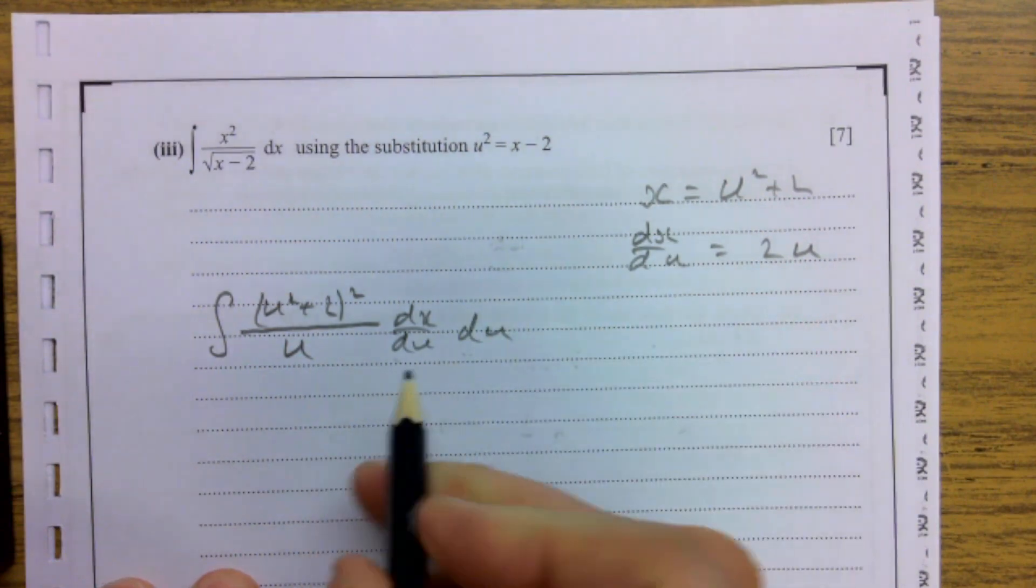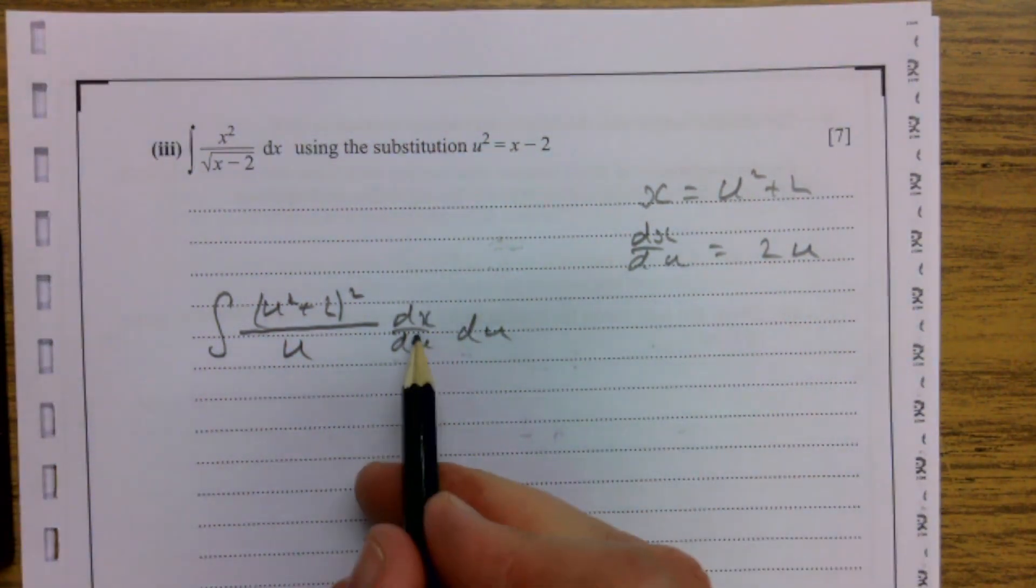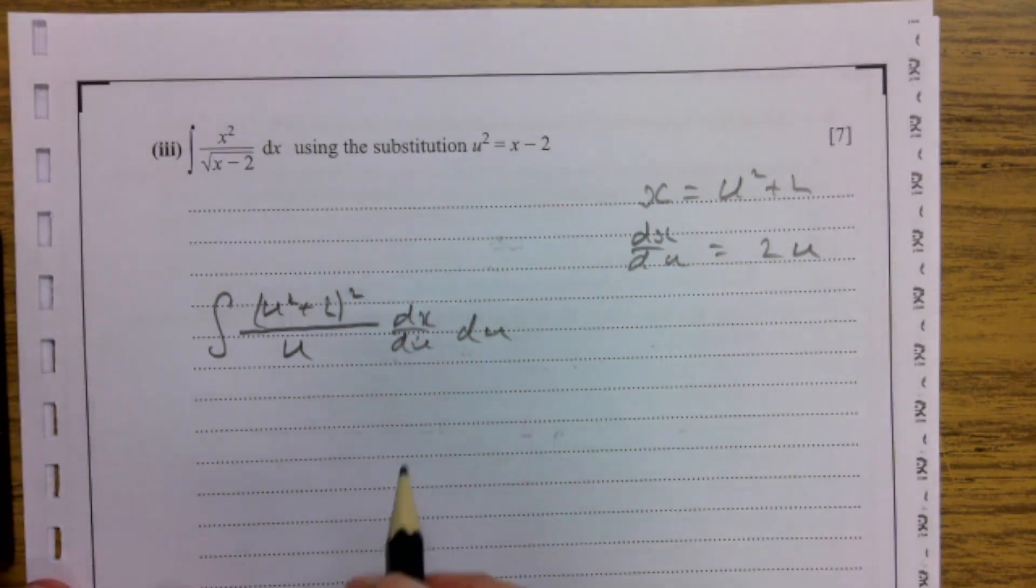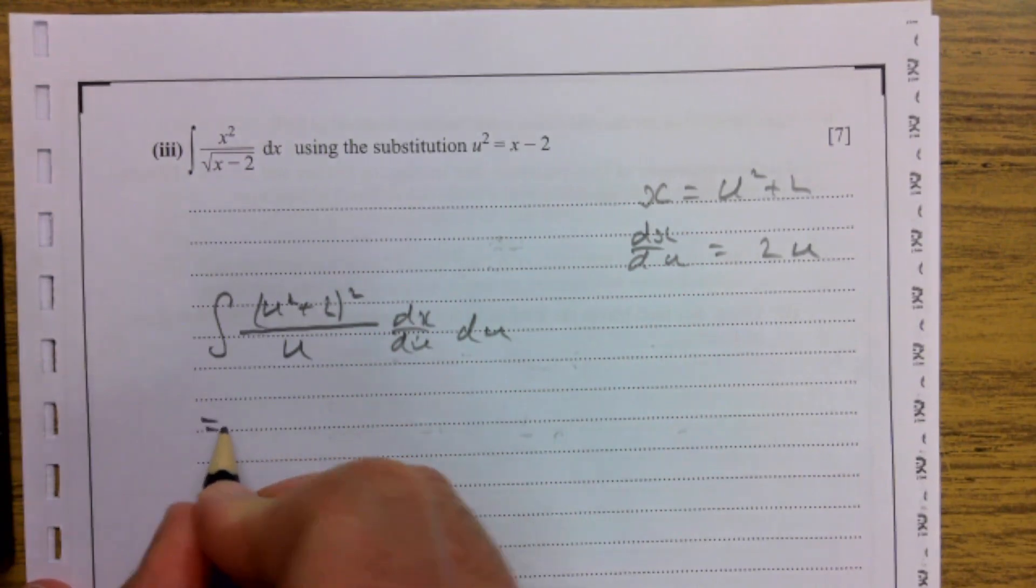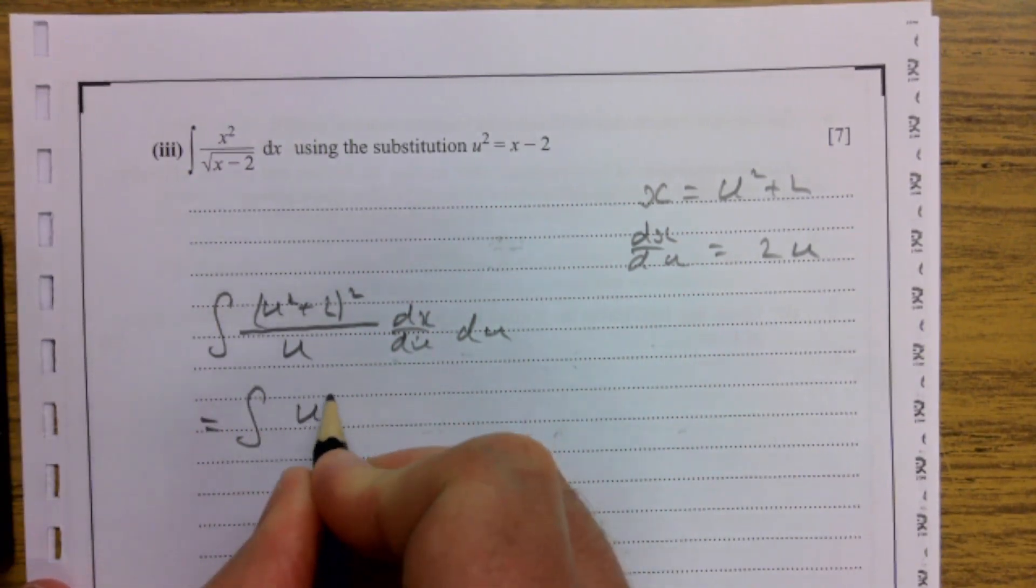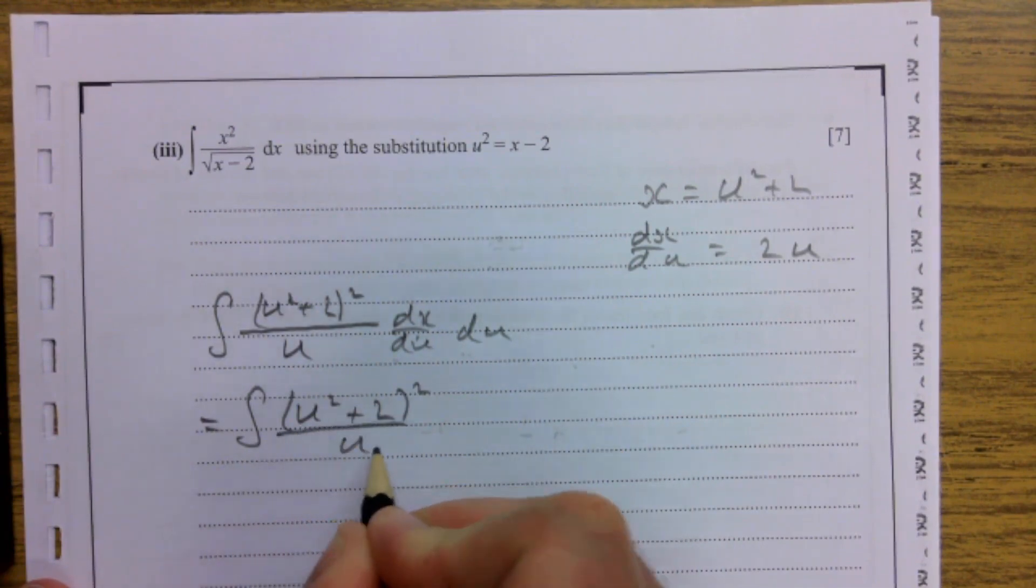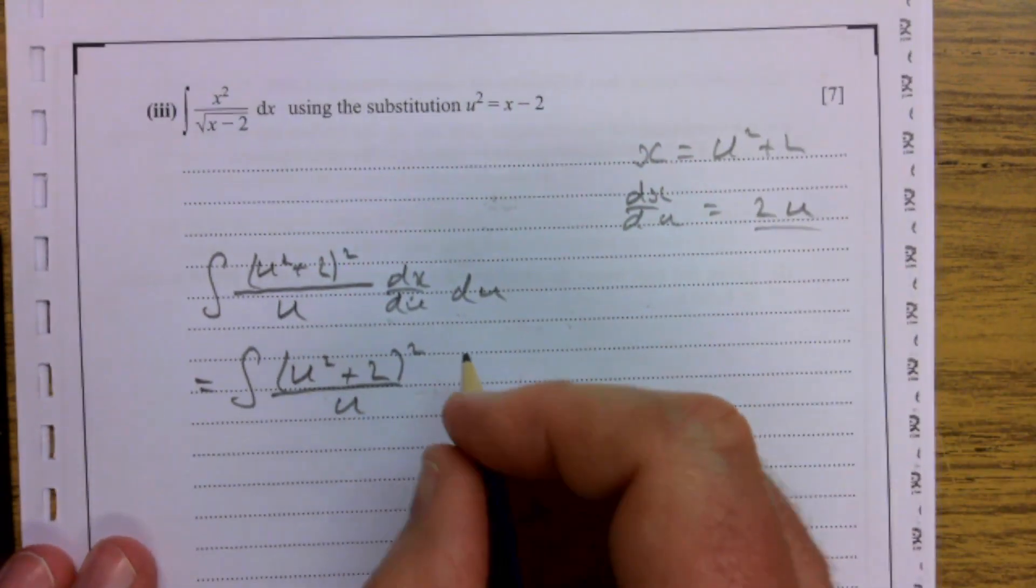People set this up different ways but that's okay. And I'm going to change that then for a 2u. The integral of u squared plus 2 all squared all over u dx by du, and it was 2u, u du.